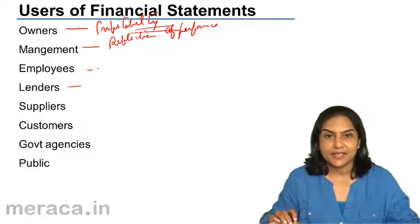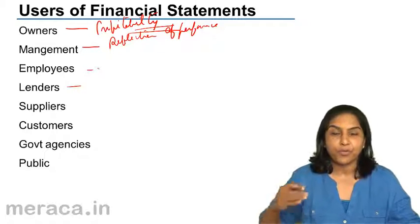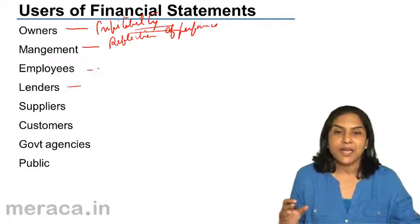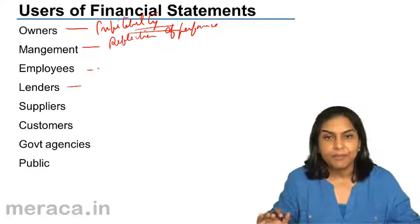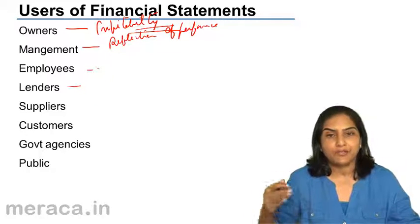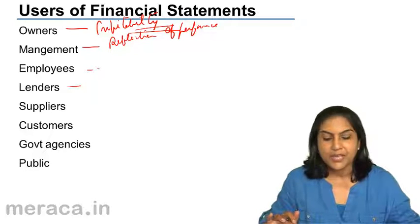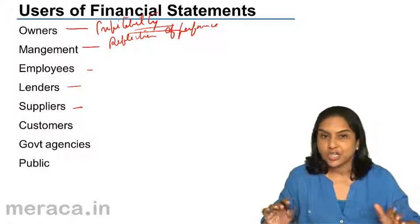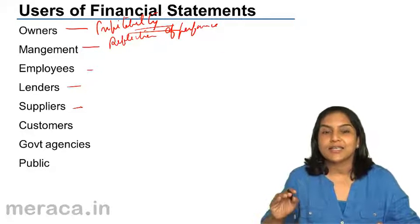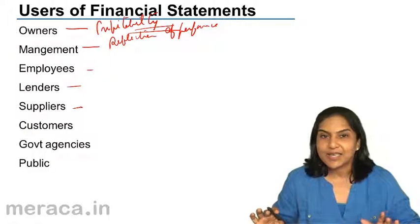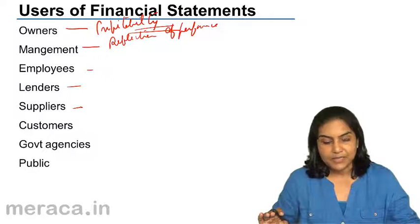Similarly, creditors. Normally, a lot of business runs on credit. Creditors are suppliers who have given materials but have not yet been paid because payment is due after two, three, or six months — that is the arrangement with the company. They are also very keen to be assured that they will definitely get their money back, and that it is wise to extend credit to this particular business.